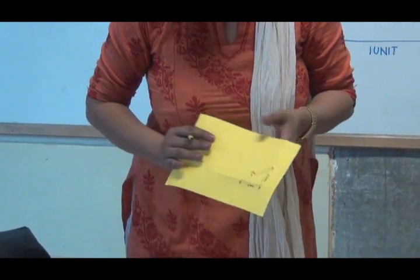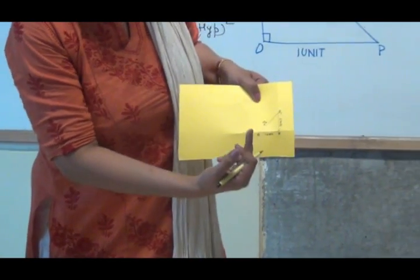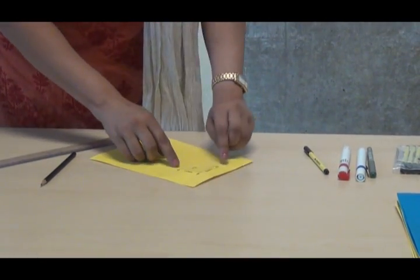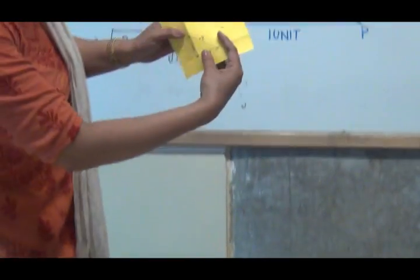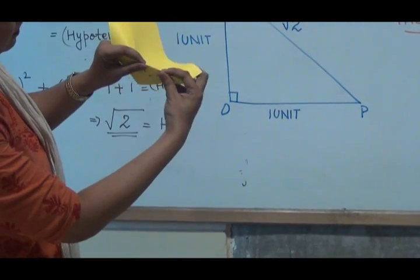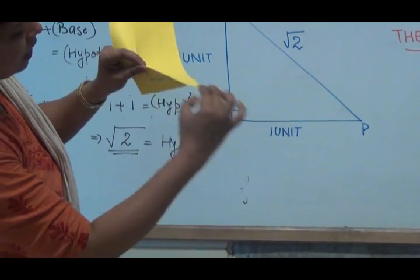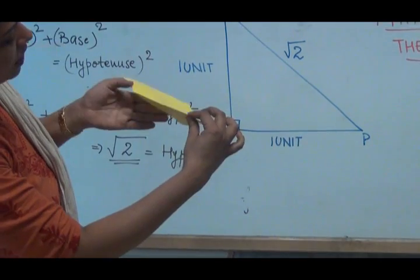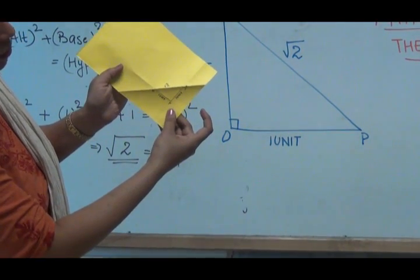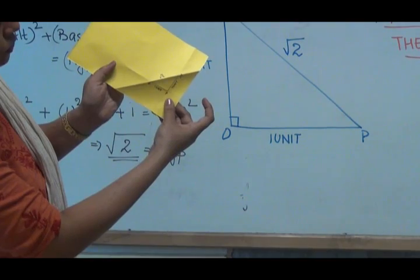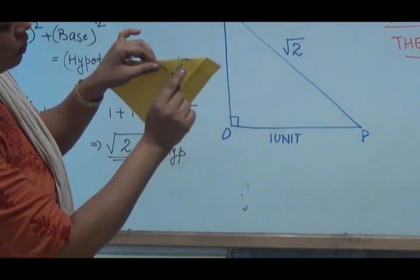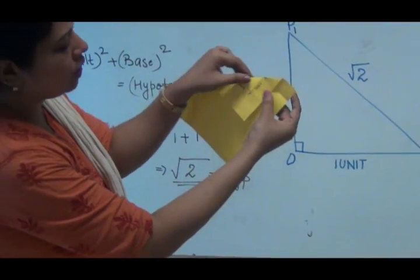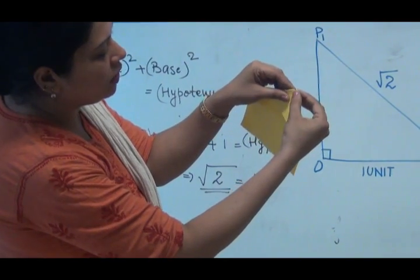Now, again, further, I have to find out after root two, I have to find out root three as well. So we take root two as base and fold the paper. I am folding the paper along root two. I will open and show it to you what I have done. I folded the paper along root two and again I want a perpendicular on point P1 now. I want a perpendicular on point P1. I fold the paper like this. From point P, I fold. I am folding the paper from point P.